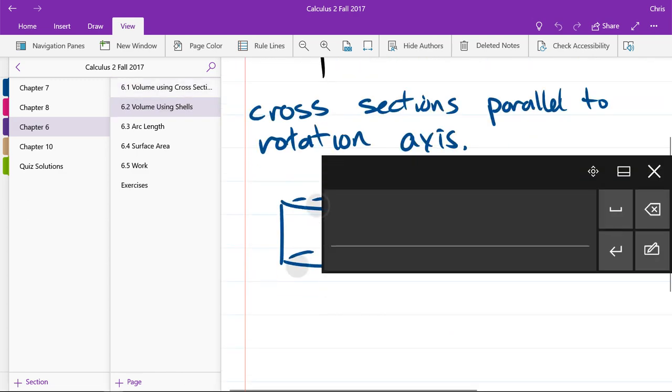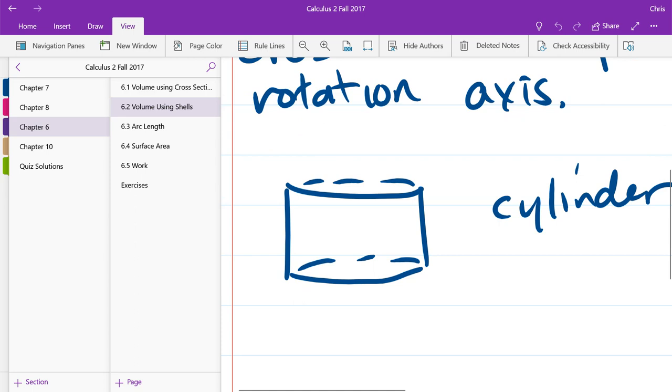So we're still going to be looking for area, but now it's area of the cylinder. Remember, there's no top and bottom. So this is just the area on the vertical single face. We're not counting the lid or the bottom. Those are not included in the area.